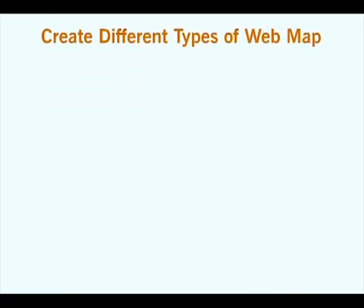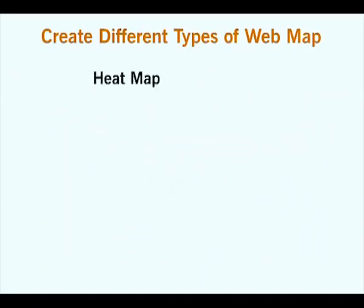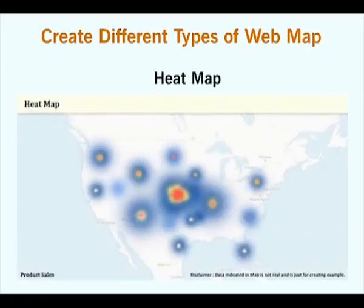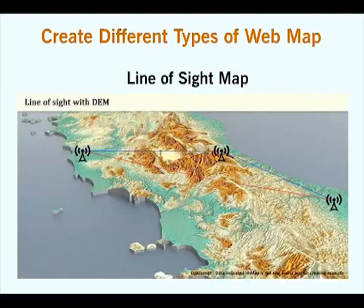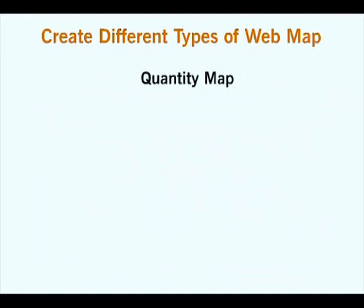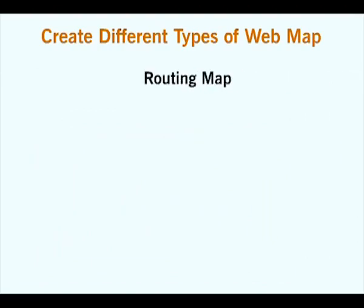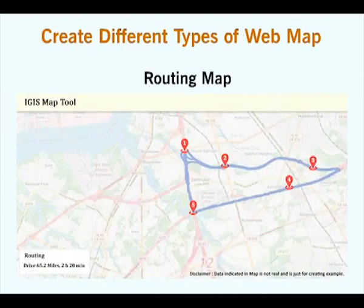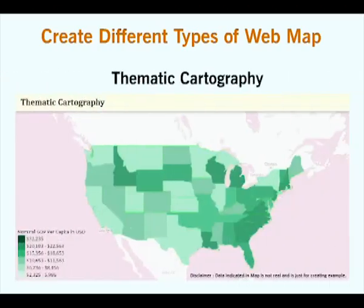With iGIS Map Tool, users can create different types of maps like bubble map, heat map, line of sight map, quantity map, routing map, cartography map, and many more.